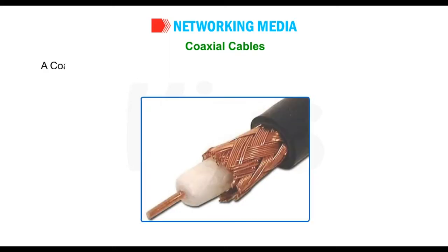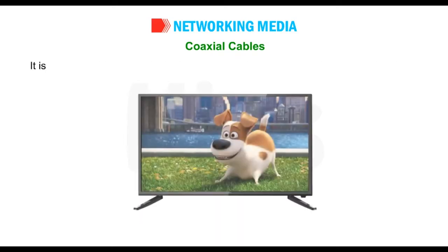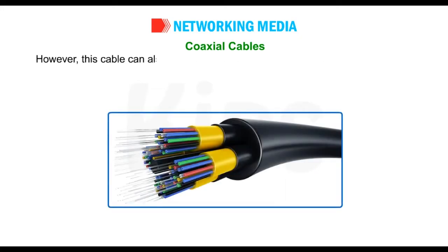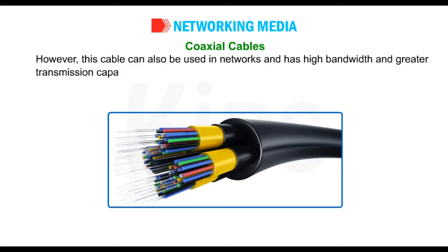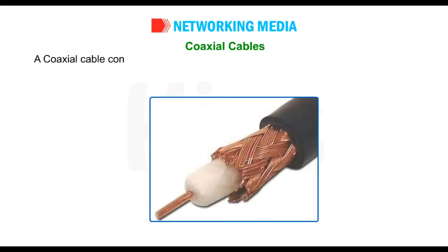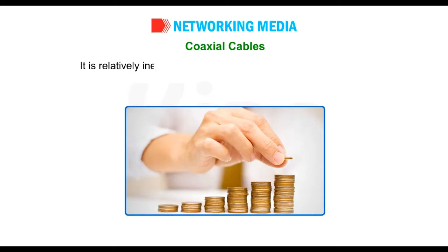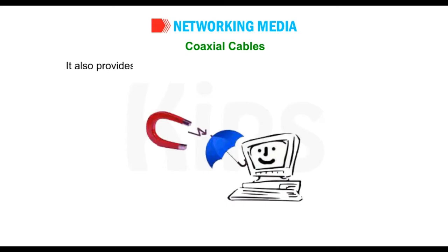Coaxial cables: a coaxial cable is used in the transmission of video, communications and audio. It is mainly used by the cable television industry to connect TVs to a cable TV service. However, this cable can also be used in networks and has high bandwidth and greater transmission capacity. A coaxial cable consists of a central copper wire surrounded by insulation and then a shield of braided wire. It is relatively inexpensive and can transmit data at higher rates. It also provides better immunity against electromagnetic disturbances.